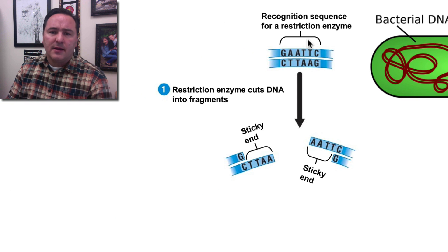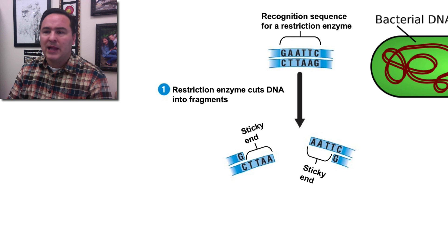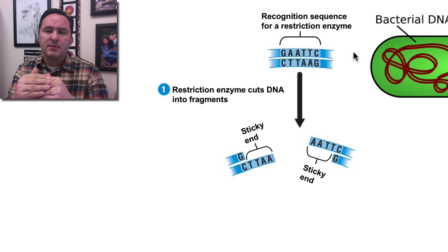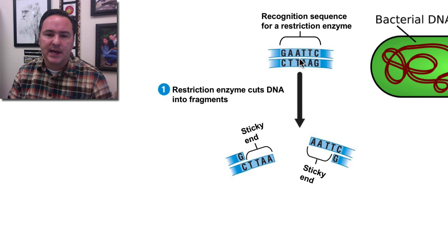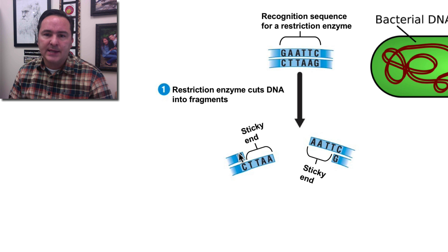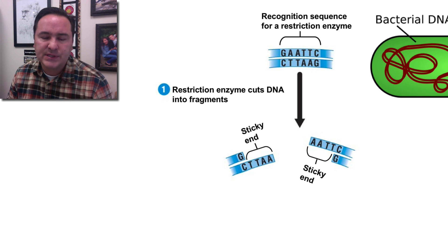So, we can then take a plasmid, for example, and we can cut it where we know it's going to be cut from a restriction enzyme. When we do that, these ends that are left over, so here, this one we cut at the G-A-A-T-T-C cut.